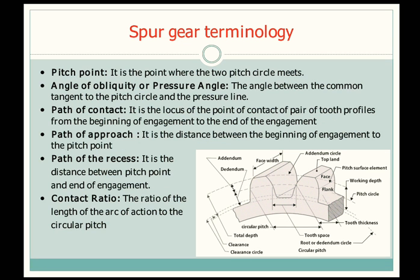Next is pitch point. It is the point where the two pitch circles meet. The pitch circle is an imaginary circle, and when two gears are in contact or mating, the pitch circle of one gear and the pitch circle of the mating gear both touch each other at a single point — like a roller action when two rollers roll with each other. That point is known as the pitch point, the circles are known as pitch circles, and the diameter of these circles is known as the pitch circle diameter.